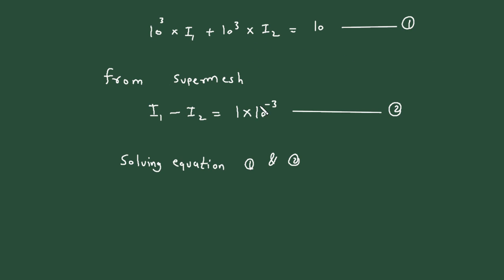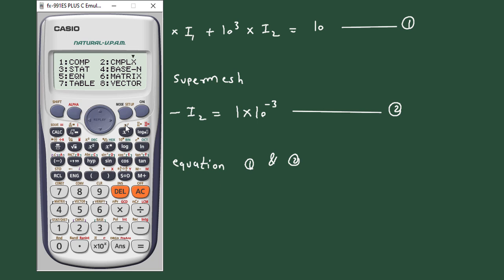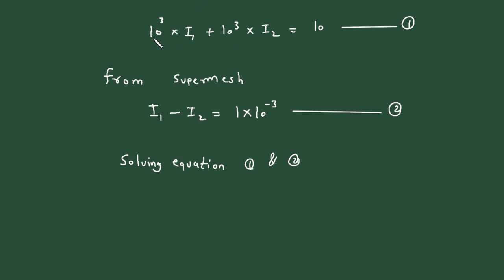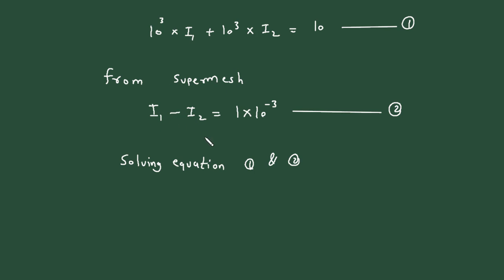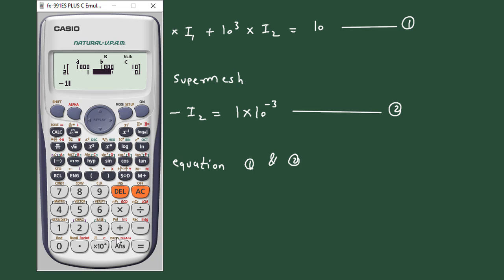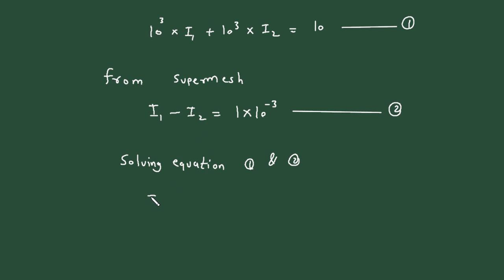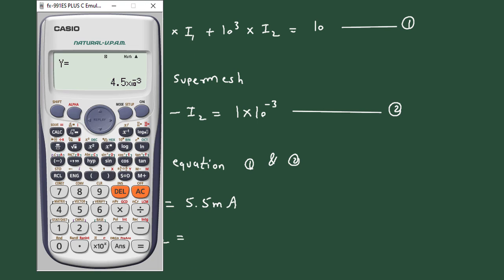Solving equations 1 and 2: for equation 1 the coefficients are 10³ and 10³, equal to 10; for equation 2 the coefficients are 1 and −1, equal to 10⁻³. Solving these two equations gives I1 equals 5.5 milliampere and I2 equals 4.5 milliampere.